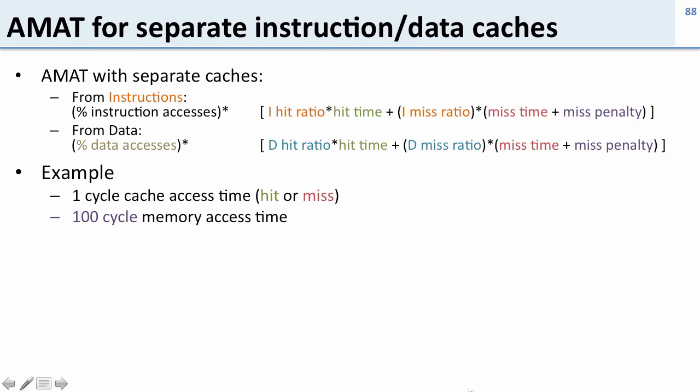So let's take a look at an example here. We have one cycle cache access time for hit or miss and a hundred cycle memory access time. Our instruction cache has a miss ratio of only 1%, but our data cache has a miss ratio of 5%. 33% of instructions are loads or stores. So now let's apply this formula.